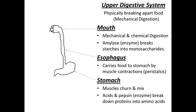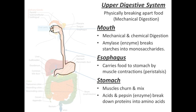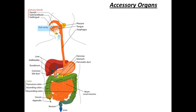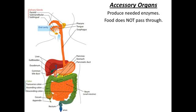Moving on to the next organs we're going to talk about: these are the accessory organs, which we mentioned in the previous podcast. They are organs that food does not pass through, but they produce lots of other chemicals — most importantly, enzymes that are used to chemically break apart food.